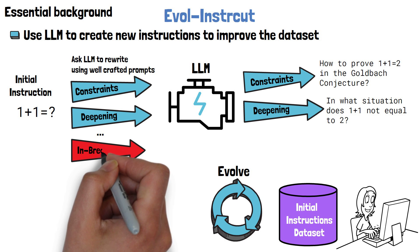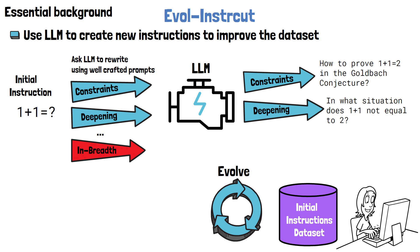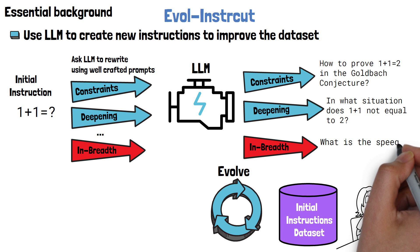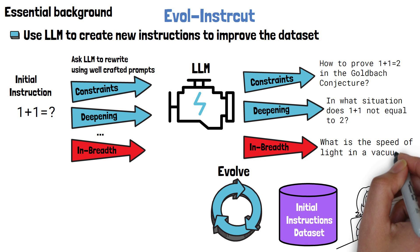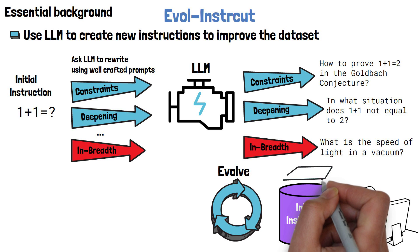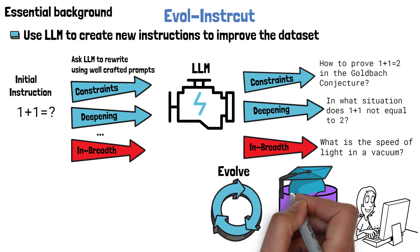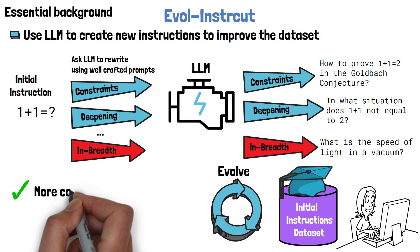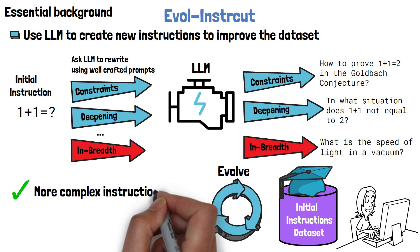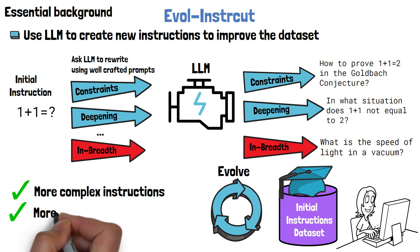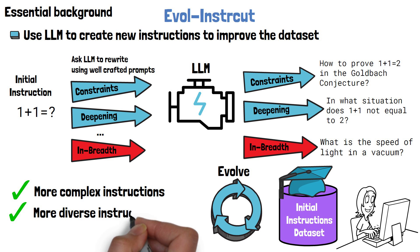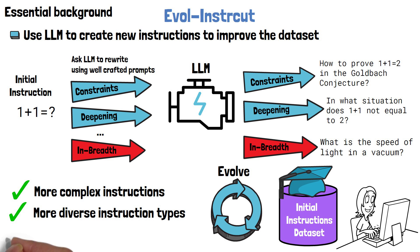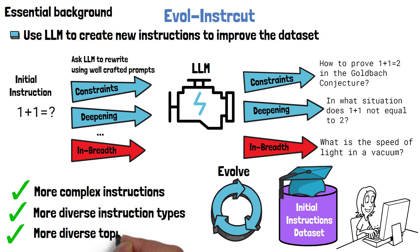Another type of evolving is called in-breadth, where the prompt asks the LLM to create an entirely new instruction by taking inspiration from the original instruction. In this case the model yields a completely new instruction. Once this process is finished, we get an enhanced database with more complex instructions, more diverse instruction types — meaning the tasks the instructions ask the model to solve are more diverse — and more diverse topics, all of which would have been very hard to do manually.